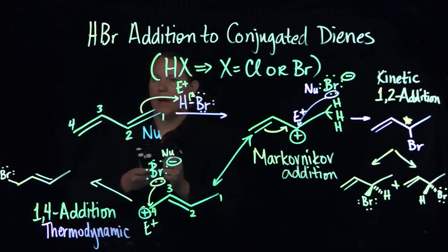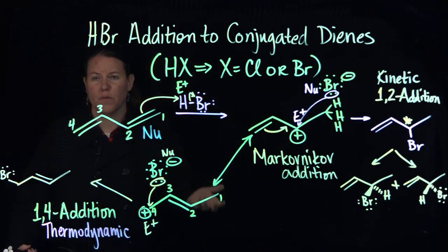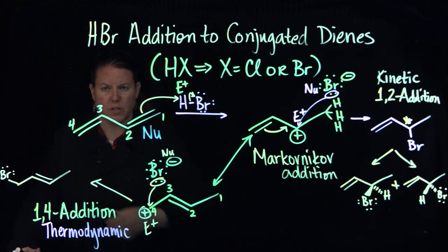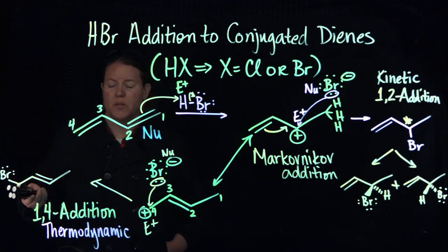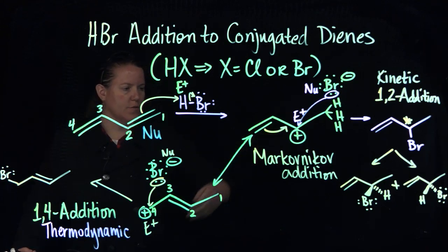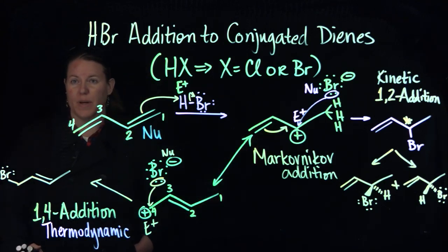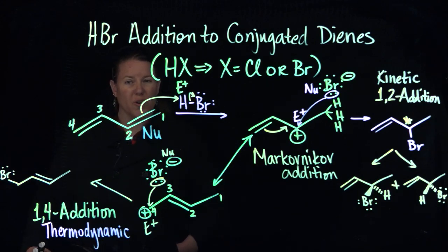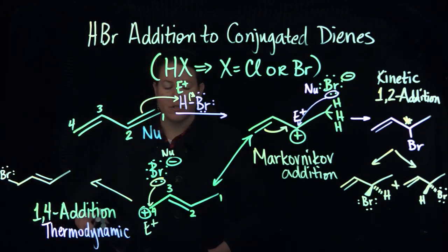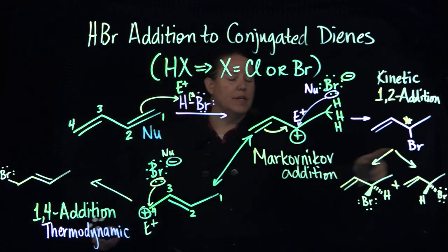Now why is that called the thermodynamic product? The reason for that is because this is the overall more stable product. In other words, the double bond is more substituted. The Br has some conjugation. Life is going well. There's some conjugation over there too. But really it's that the double bond is more stable. It obeys Zaitsev's rule a little bit more. And so because of that, it's more substituted. It is lower energy overall. This product is lower energy overall than these are.